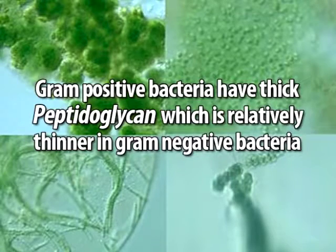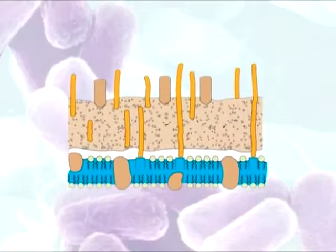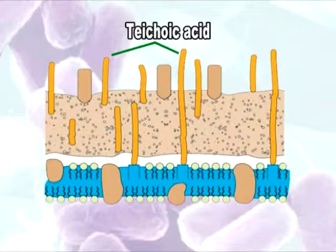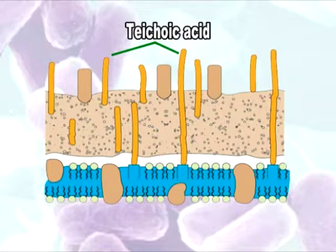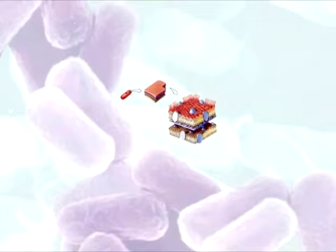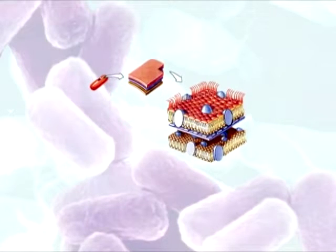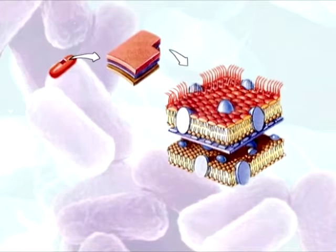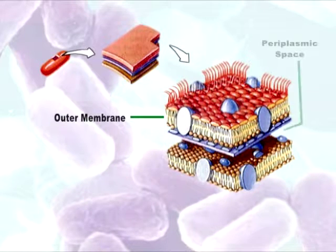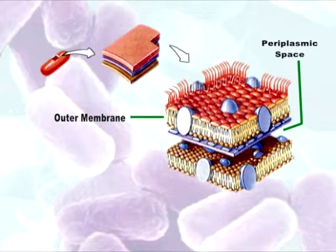In gram-positive bacteria the peptidoglycan layer is very thick, but it is relatively thinner in gram-negative bacteria. Teichoic acid — a complex of glycerol phosphates and ribitol that helps in attachment — is present only in gram-positive bacteria, not in gram-negative. Gram-negative bacteria have an outer membrane outside the cell wall, while gram-positive bacteria do not. As a result, the periplasmic space — the space between the cell wall and the cell membrane — is absent in gram-positive bacteria.